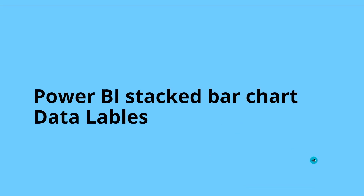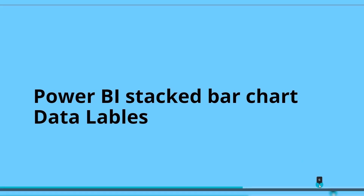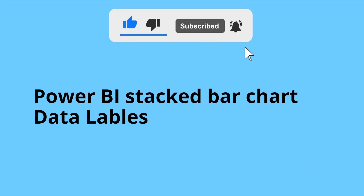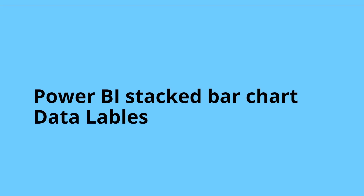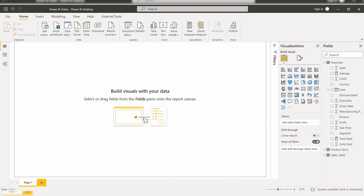Data labels usually display the data values. For example, if you want to know the sales that happened for a selected product in the stacked bar chart visual, we can simply enable the data label which displays the exact data value of the selected product. Now I will show you how to configure the data labels and set the position for the data labels in the Power BI stacked bar chart.